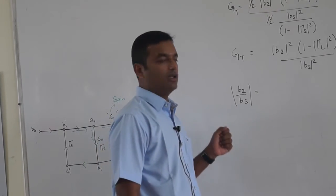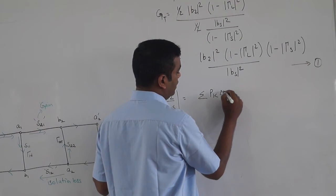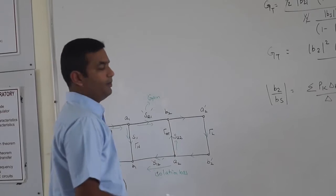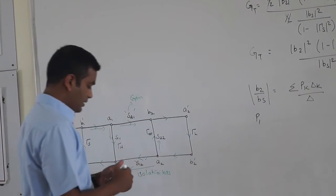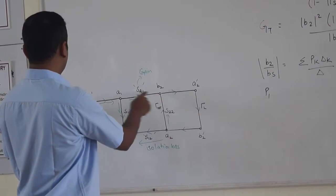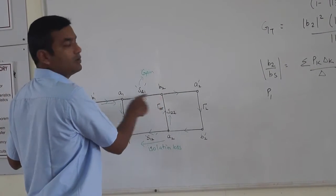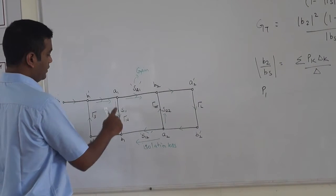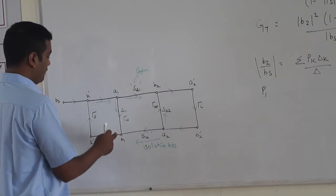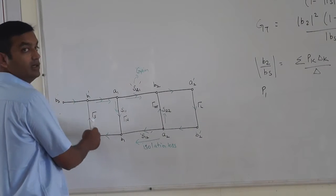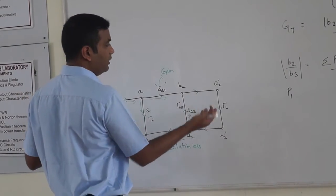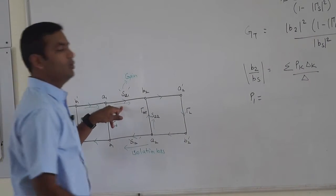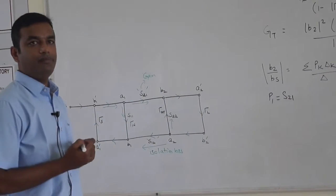Let us use Mason's rule to calculate b_2/b_s. Mason's rule states: (Σ P_k Δ_k) / Δ. We need to identify the forward paths between b_s and b_2. There is one forward path. The gain of this forward path P_1 is S_21.